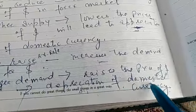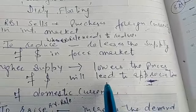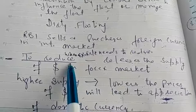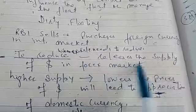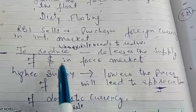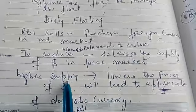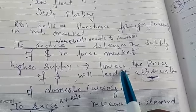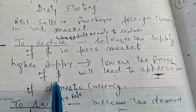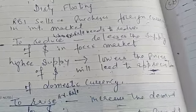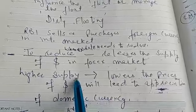There are two situations: appreciation and depreciation of your domestic currency. In case of appreciation, the central bank wants to reduce the exchange rate. To reduce the exchange rate, the supply of dollars is increased — the central bank releases the supply of dollar in the foreign exchange market. Higher supply compared to demand lowers prices, so higher supply leads to lowering the price of foreign currency, that is the dollar.